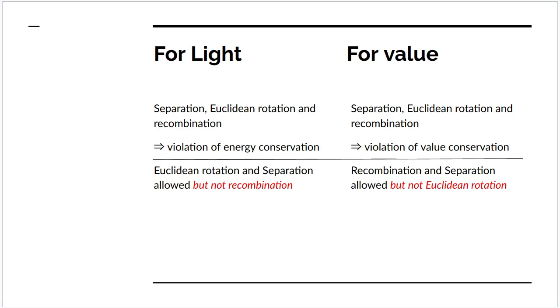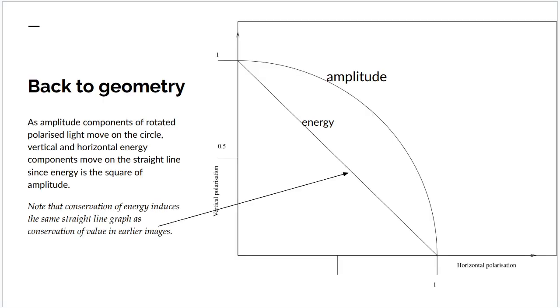Now there is a further similarity between value space and energy. If we go back to geometry, the amplitude components of the polarized light move along this circle as you rotate the polarization. But the energy components, since they're proportional to the square of the amplitude, move along this straight line.